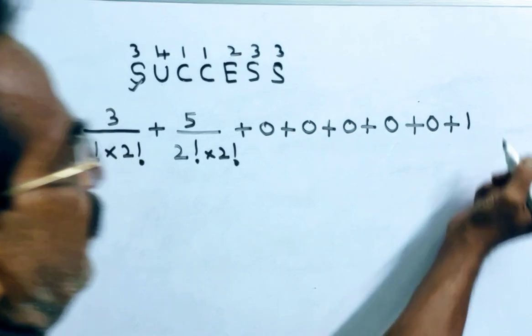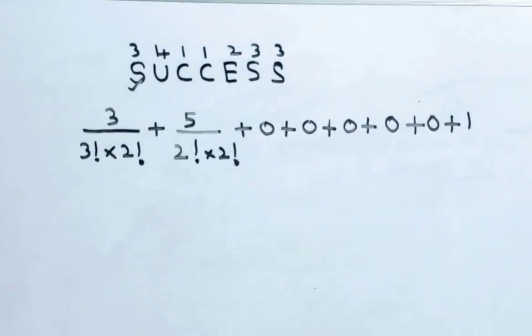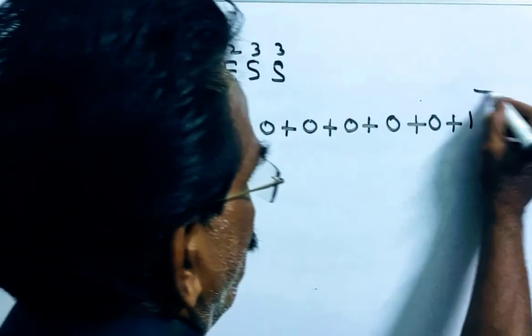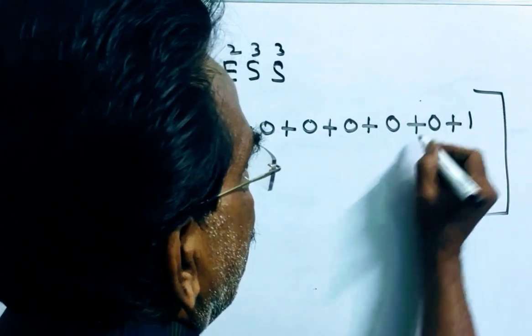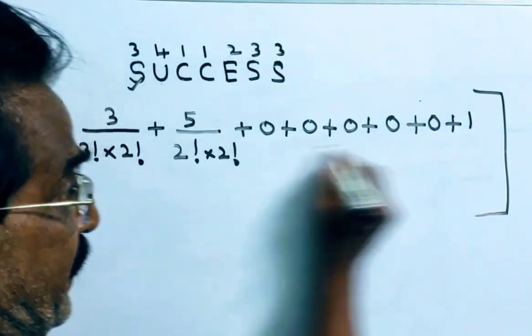Plus 1, plus 1, this is the rank of the word success friends. After this, what we have to do is multiply these things,